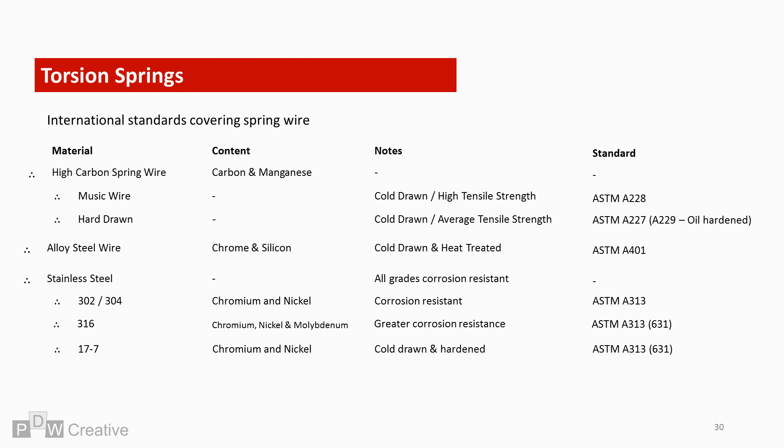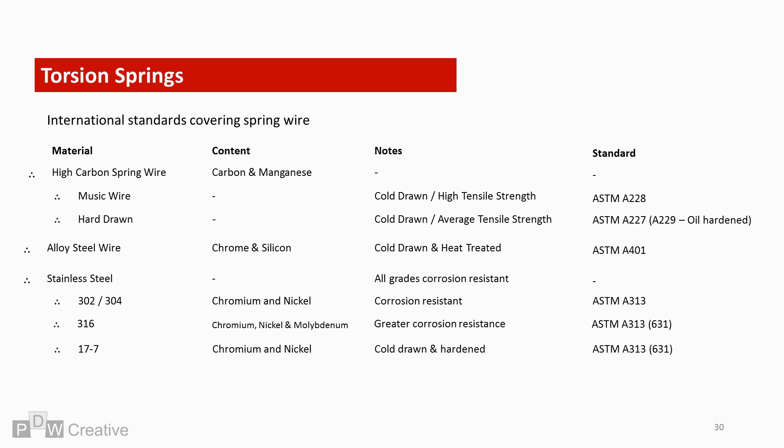Stainless steel spring wire tends to be less magnetic than the other wires. It also has a better corrosion resistance than other materials. Lastly, non-ferrous alloy wires such as phosphor bronze and beryllium copper have good corrosion resistance and greater electrical conductivity than other materials.